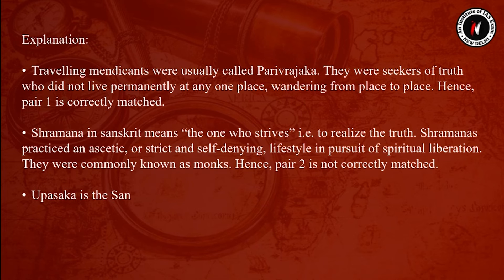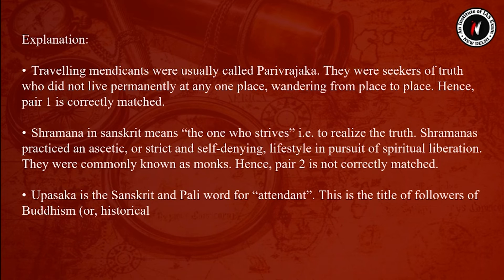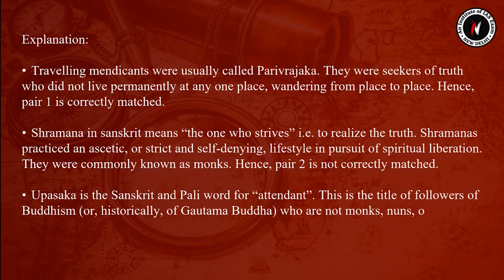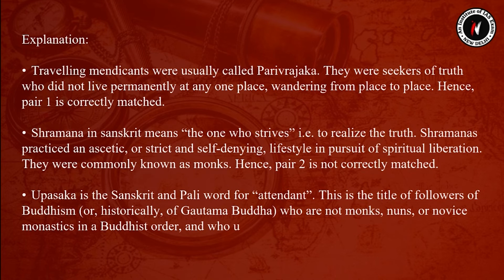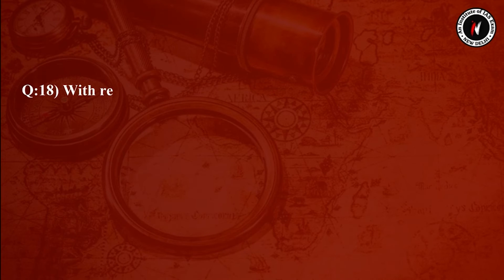Upasaka is the Sanskrit and Pali word for 'attendant.' It is the title of followers of Buddhism who are not monks, nuns, or novice monastics in a Buddhist order and who undertake certain vows. Hence pair 3 is correctly matched.